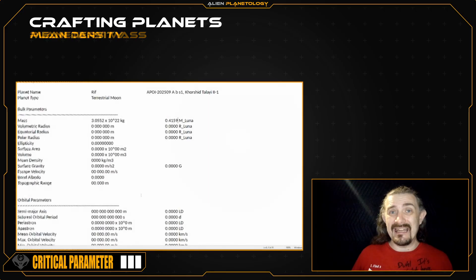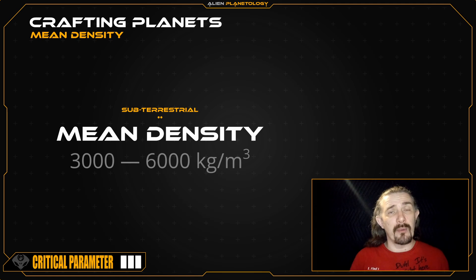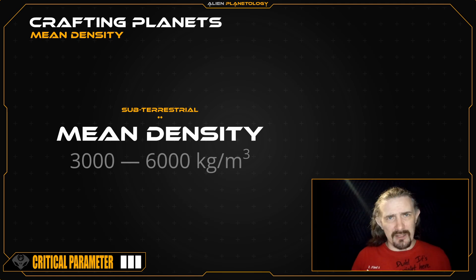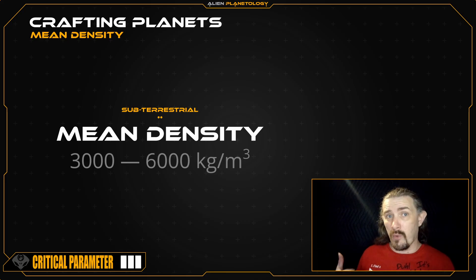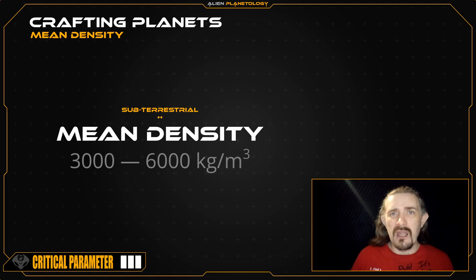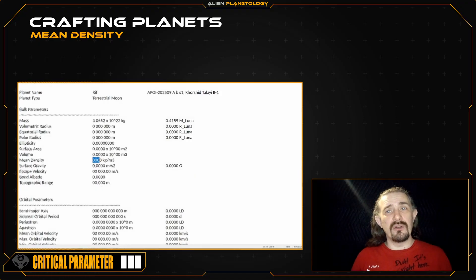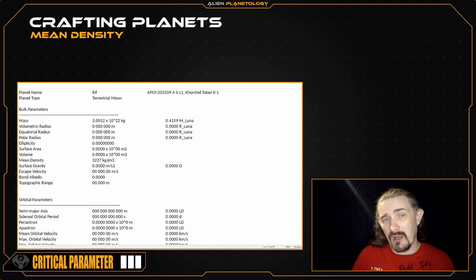Next, we will define our planet's mean density. For subterrestrial planets, the range of possible mean densities spans from about 3,000 to 6,000 kilograms per cubic meter. In the case of planets and dwarf planets, the mean density tends to be highest near the star, where metallic materials are more abundant, and tapers off toward the outer edge of the habitable zone. However, in the case of terrestrial moons, these will tend to have low densities between 3,000 and 3,700 kilograms per cubic meter due to the way they form. For my moon, I'm going to set its mean density to 3,227 kilograms per cubic meter.